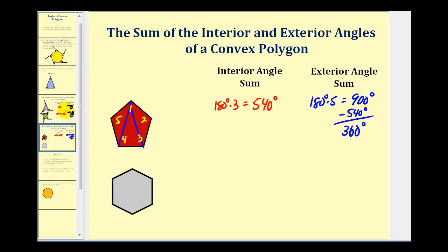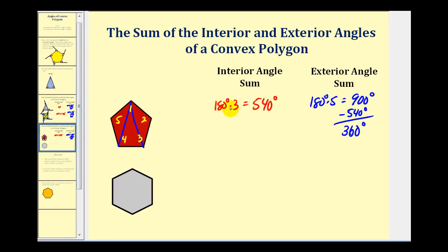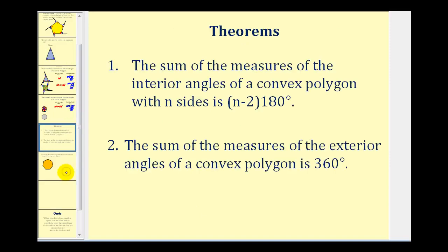Let's go back and see if we can notice a pattern. The polygon with three sides gives us 180 times one; four sides gives 180 times two; five sides gives 180 times three. This leads us to the theorem: the sum of the measures of the interior angles of a convex polygon with n sides is (n minus two) times 180 degrees. And the sum of the measures of the exterior angles of a convex polygon is always 360 degrees.